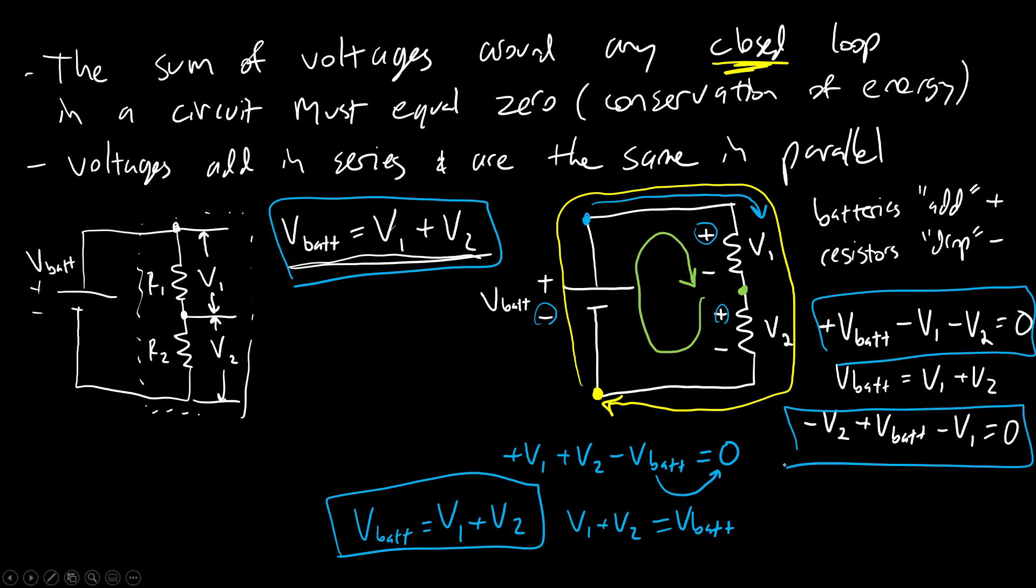So whichever approach you find most intuitive is fine. The point is to make sure all the signs are correct. So no matter which approach I took here, I wound up with the same equation. If I wound up with something that said Vbat equals V1 minus V2, then I'd done something wrong here. So again, there are different ways to do it depending on which textbook you read or which class you take. People might have different ways of going through the process or doing the sign conventions, but you should arrive at the same answer regardless of which method you use.